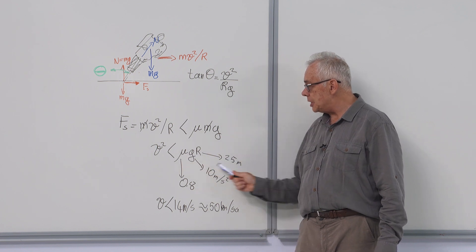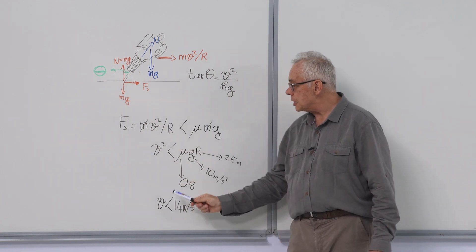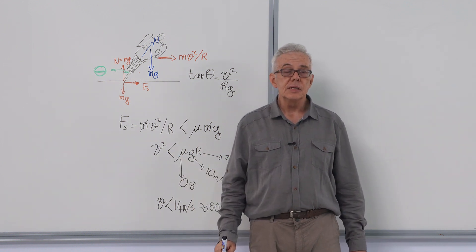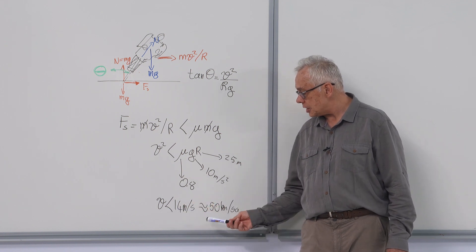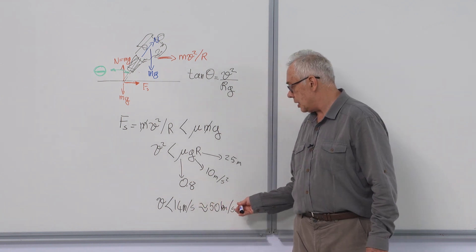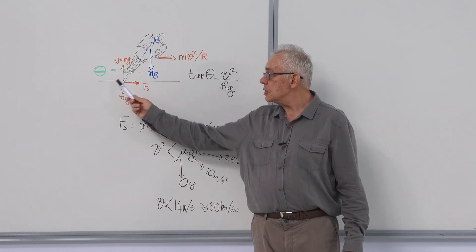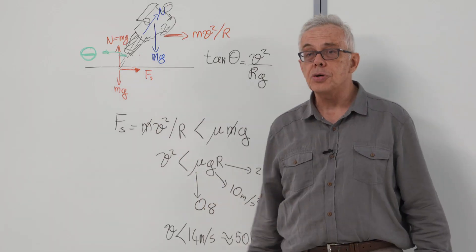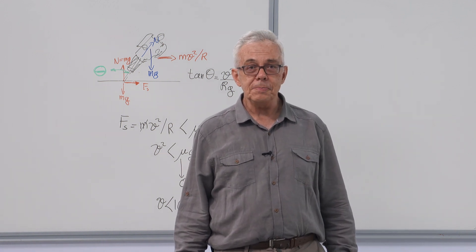If radius is 25 meters, g is 10 meters per second square and coefficient of friction is 0.8, v squared must be less than 200 meters per second square and v must be less than 14 meters per second or about 50 kilometers per hour. Now, these speeds are achieved in bike races. If the surface is good and coefficient is sufficiently large, they will take the curve. If the surface is sandy or gravelly, they will spill.